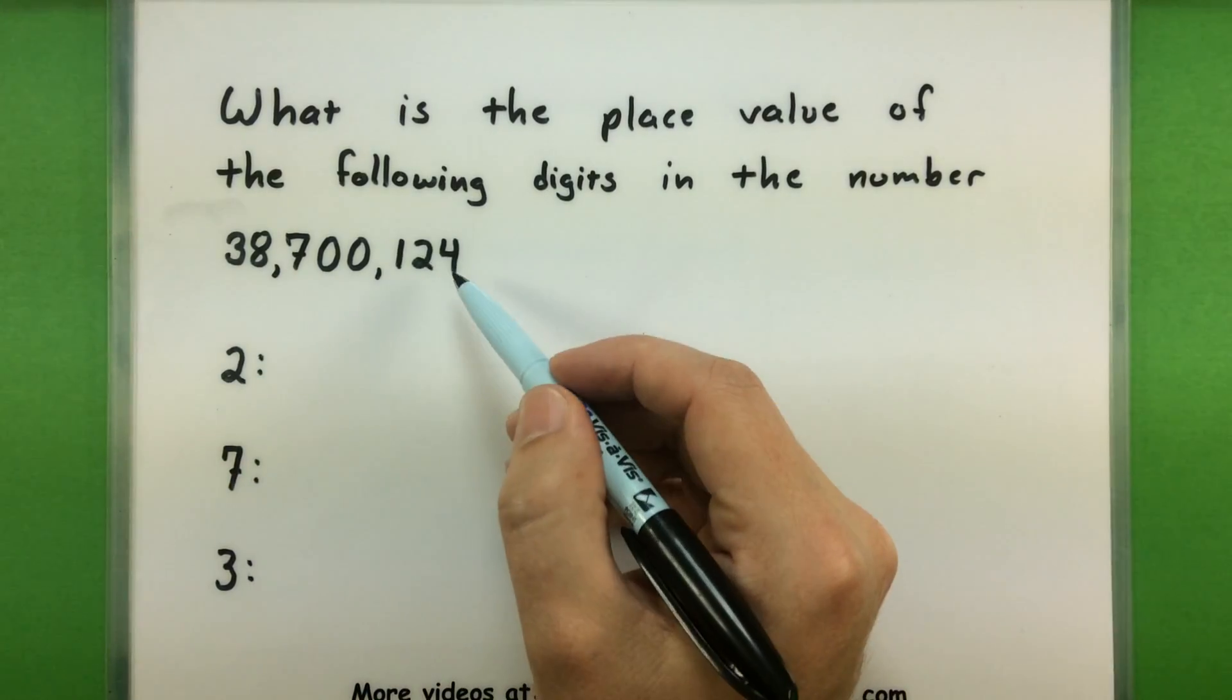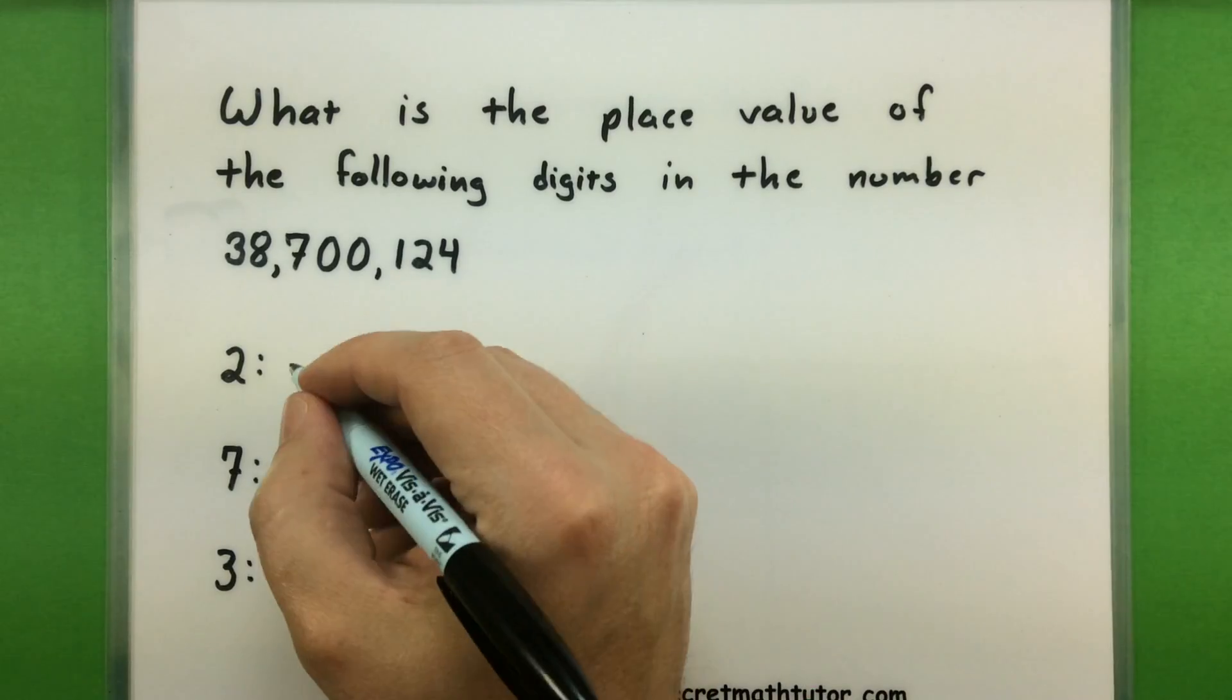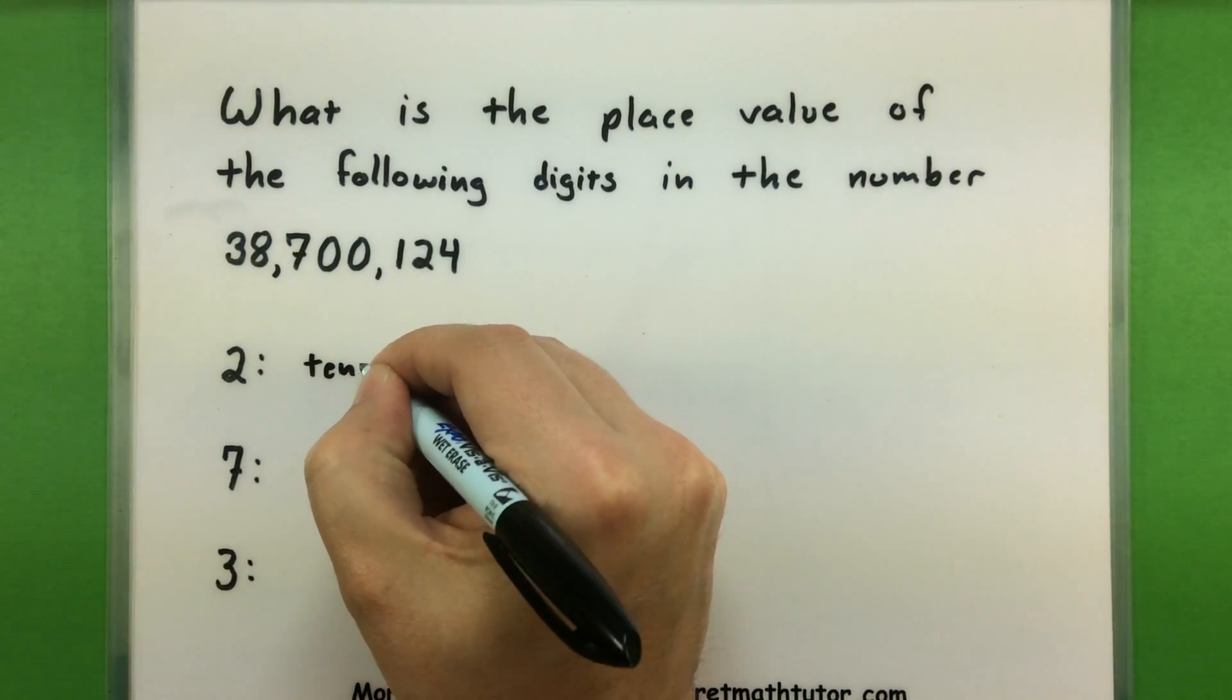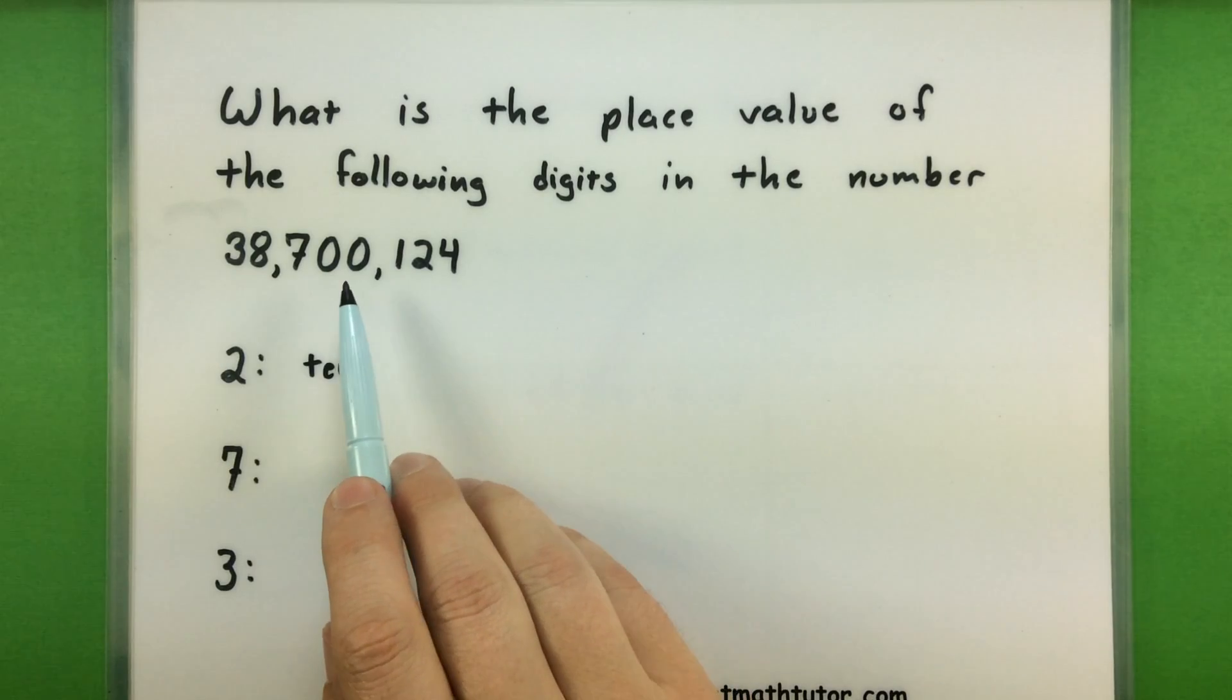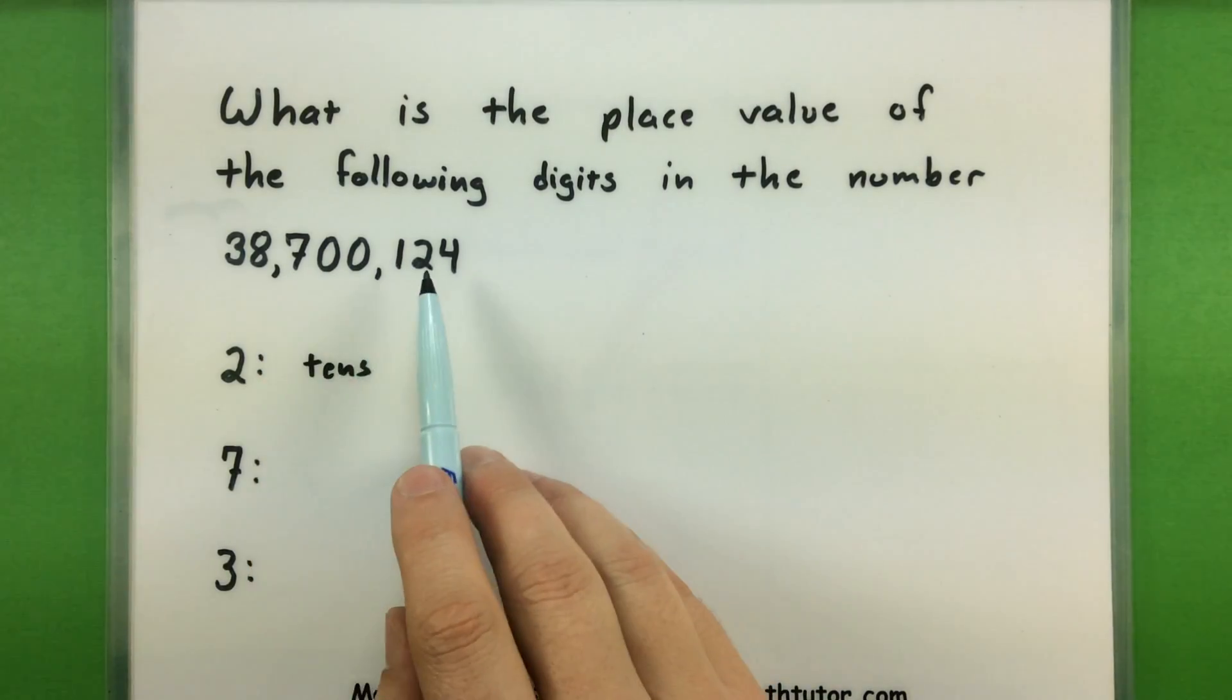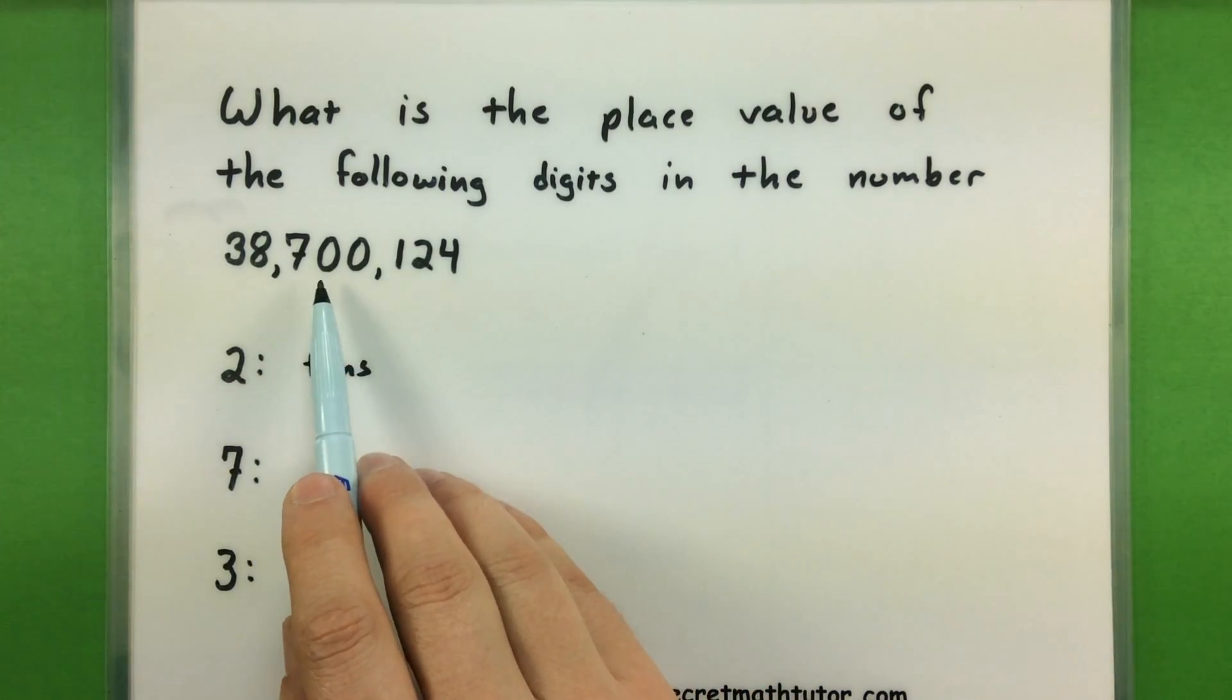This first number here is the 2, and the 2 looks like it's in the tens place. Alright, my 7 is way up there, so it's past the thousands, ten thousands.